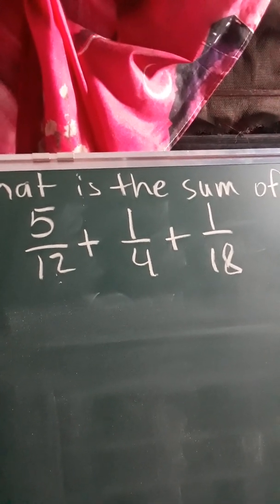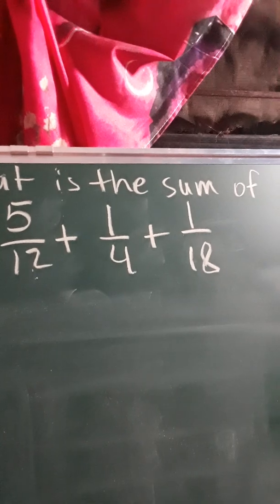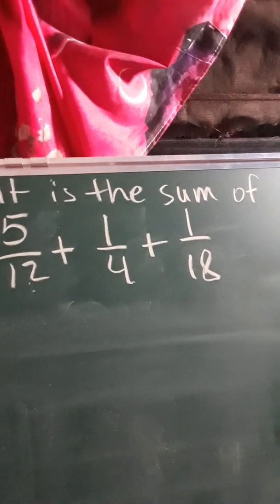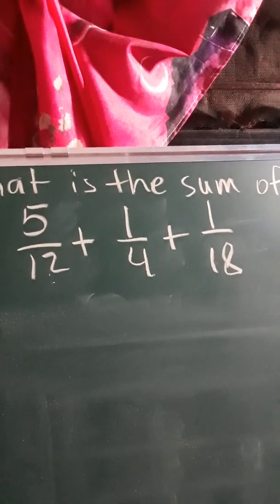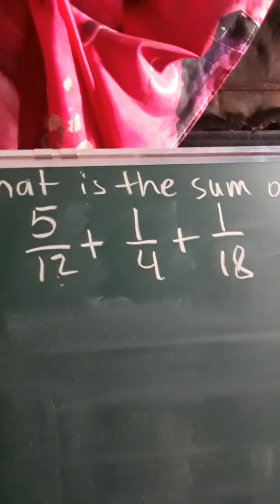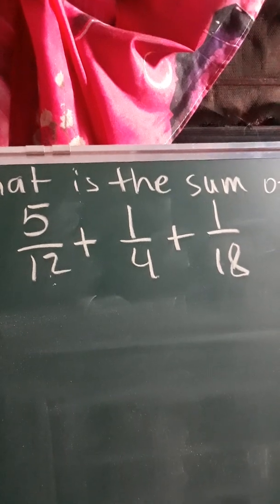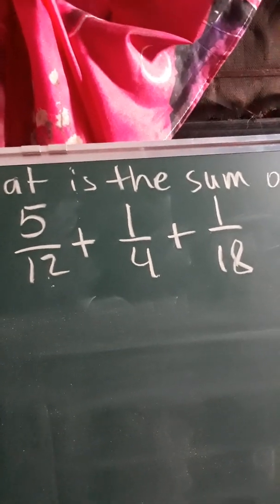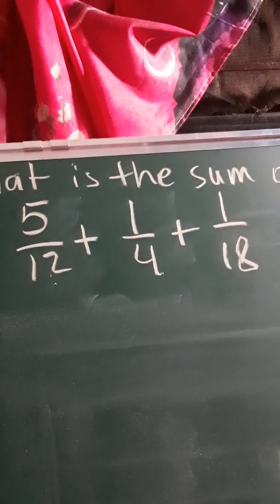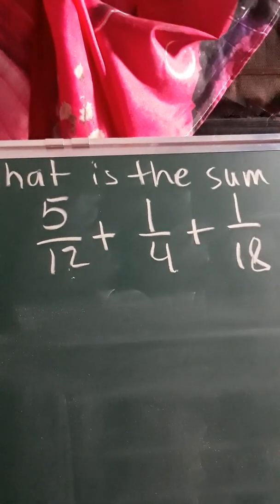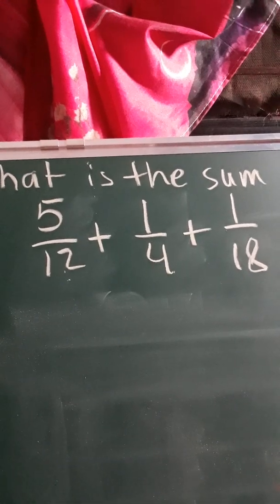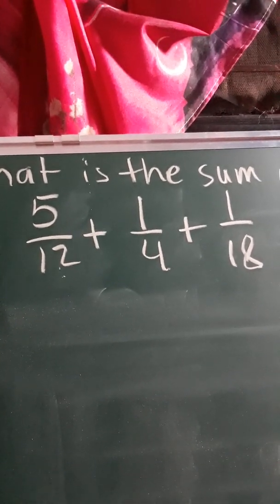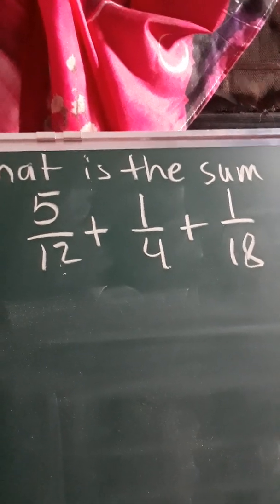What is the sum of 5 over 12 plus 1 over 4 plus 1 over 18? If you notice, these are dissimilar fractions, so first we need to get the LCD. As I mentioned in my previous video, there are two ways of getting the LCD: we have the listing method and continuous division.